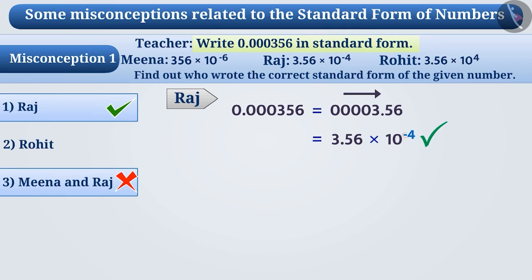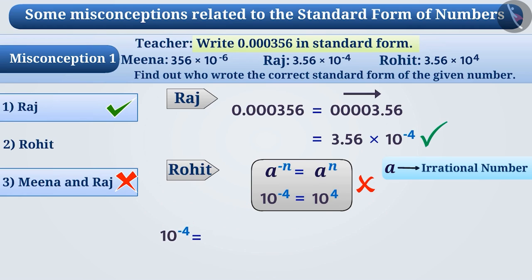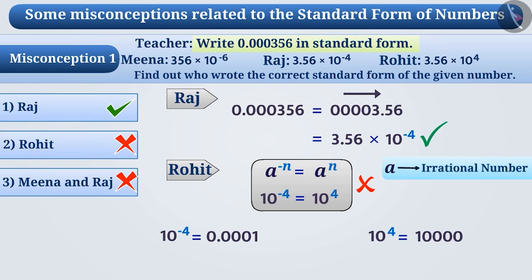Some children do not correctly indicate the exponent sign. They think that a^(−n) and a^n are equal. For example, Rohit's understanding is that 10⁻⁴ and 10⁴ are equal. But this is incorrect because 10⁻⁴ means 0.0001, while 10⁴ means 10,000. Therefore, option 2 is also an incorrect answer.